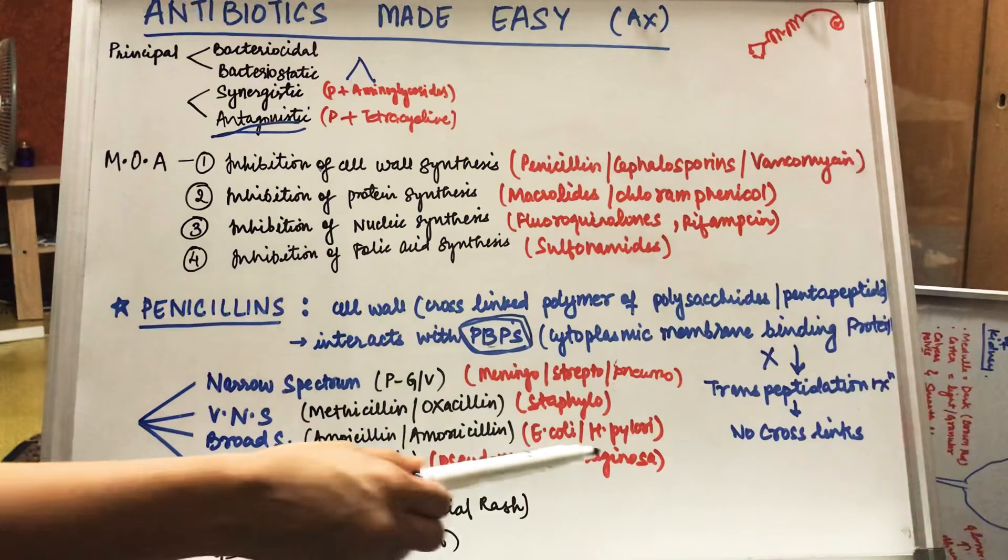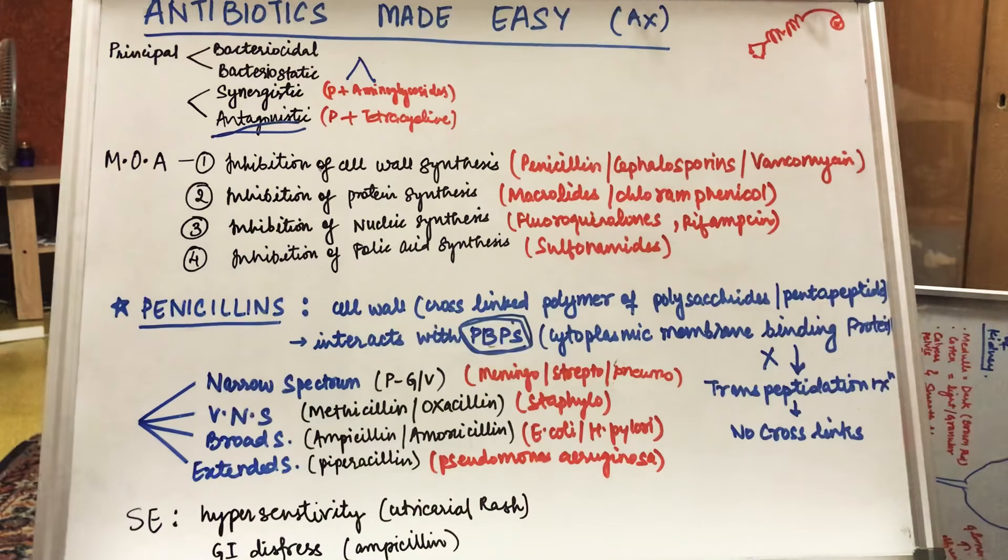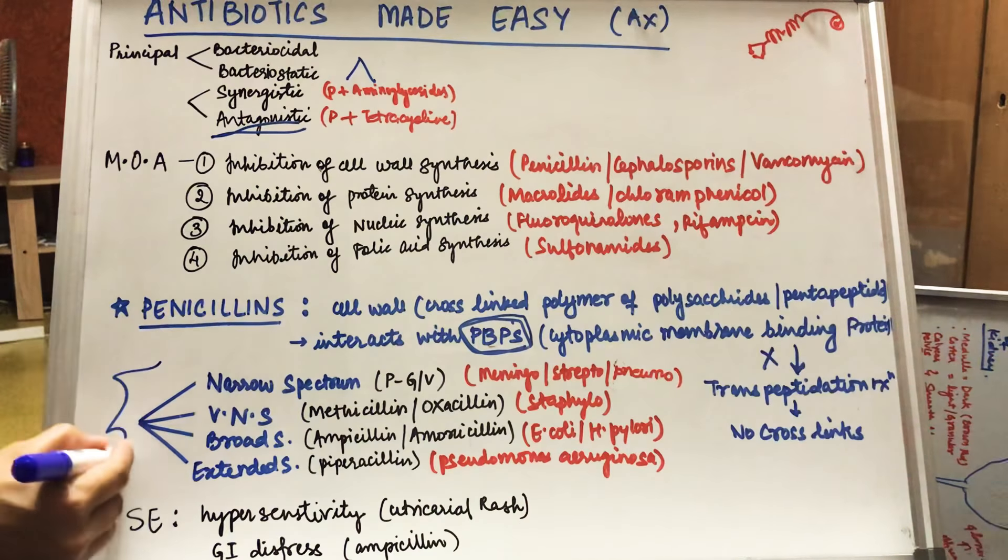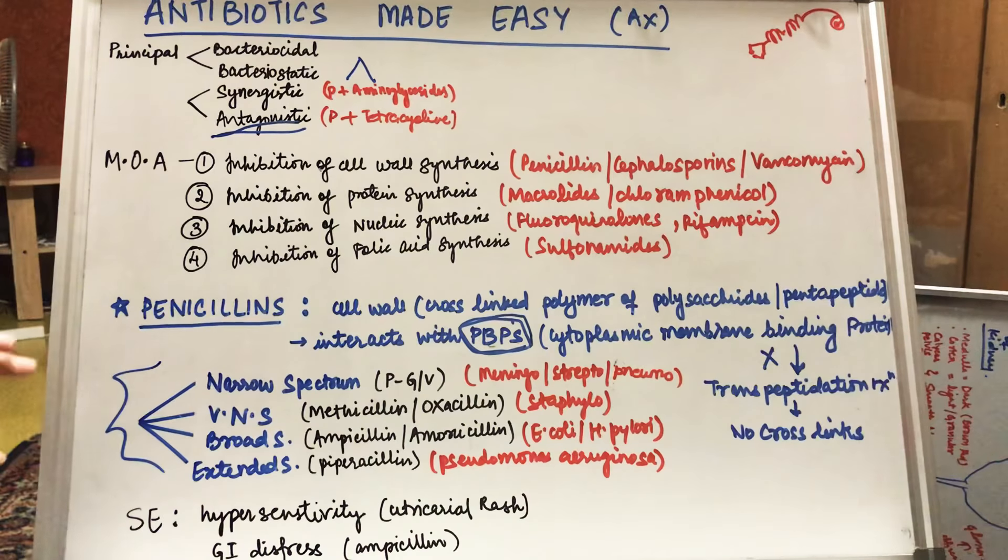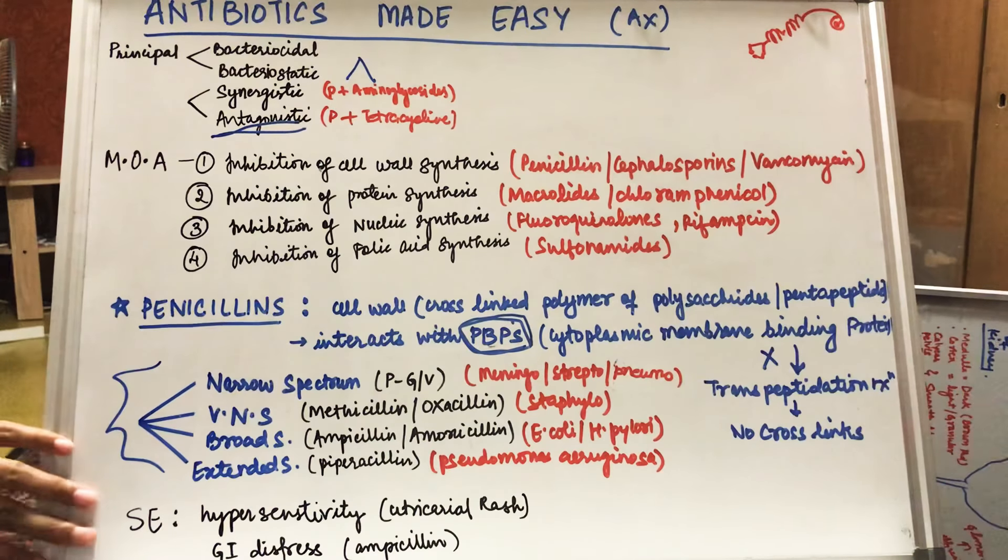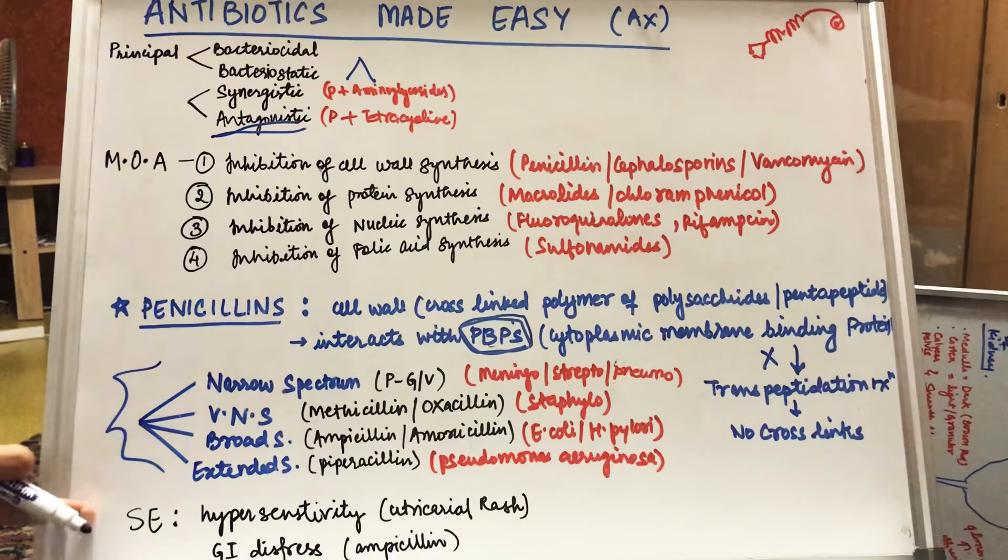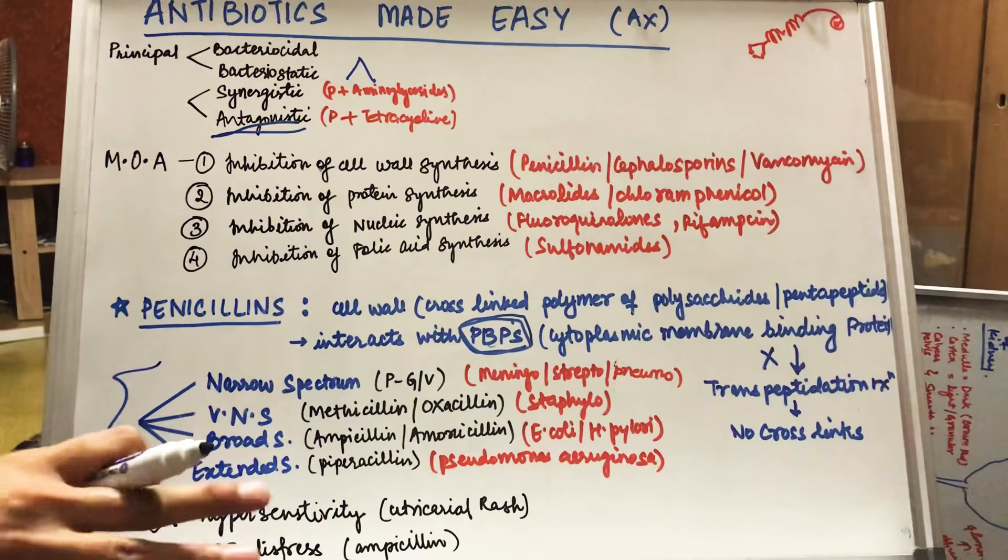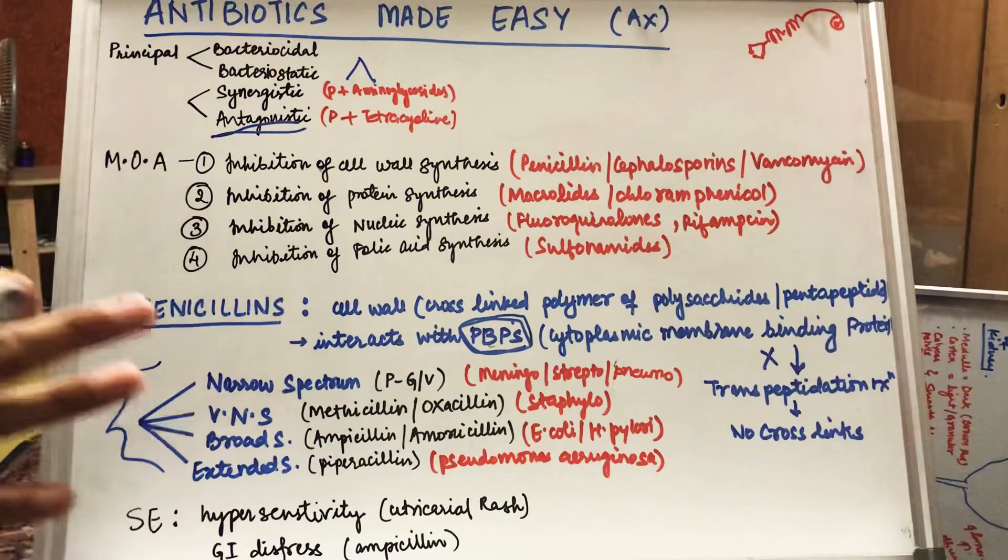Extended spectrum consists of piperacillin which works against organism Pseudomonas aeruginosa. You need to memorize this one. Now, what are the side effects of penicillin? The most common side effect is hypersensitivity reaction. The hypersensitivity reaction occurs of all four types: one, two, three, and four.